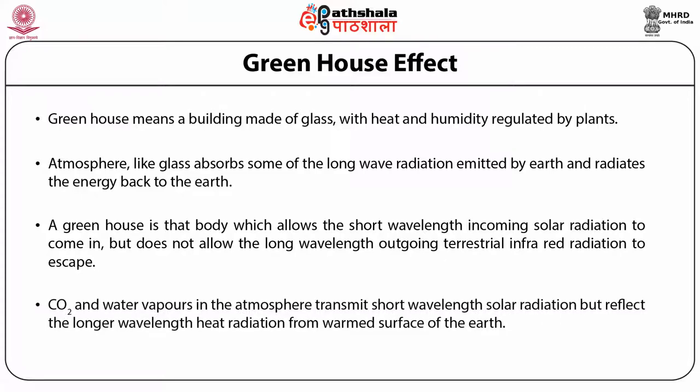Carbon dioxide and water vapors in the atmosphere transmit short wavelength solar radiation but reflect the longer wavelength heat radiation from the warm surface of the earth. Carbon dioxide molecules are transparent to sunlight but not to heat radiation. So they trap and reinforce the solar heat, stimulating an effect which is popularly known as the greenhouse effect.